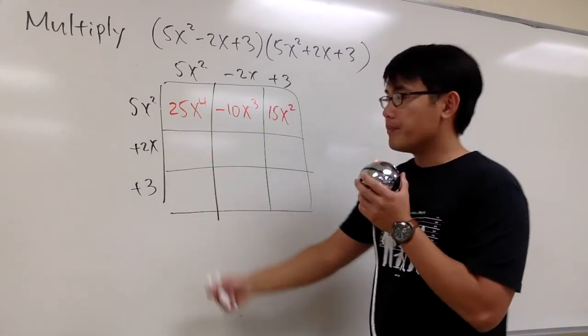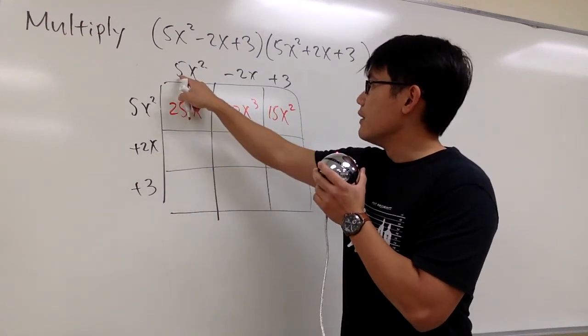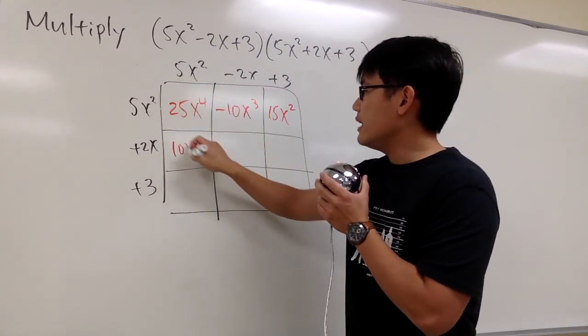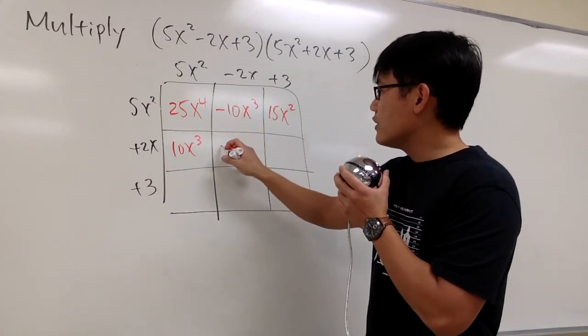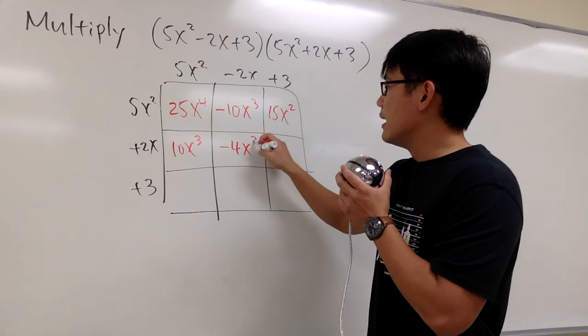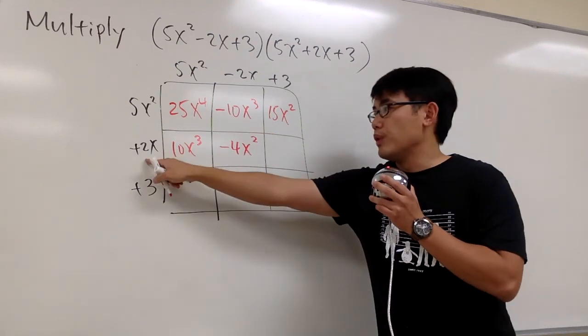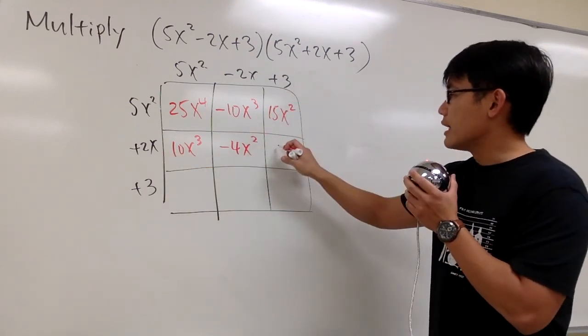And now let's move to the second row. 2x times 5x². That will give us 10x to the third power. And then 2x times -2x. That will give us -4x². 2x times positive 3. That's positive 6x.